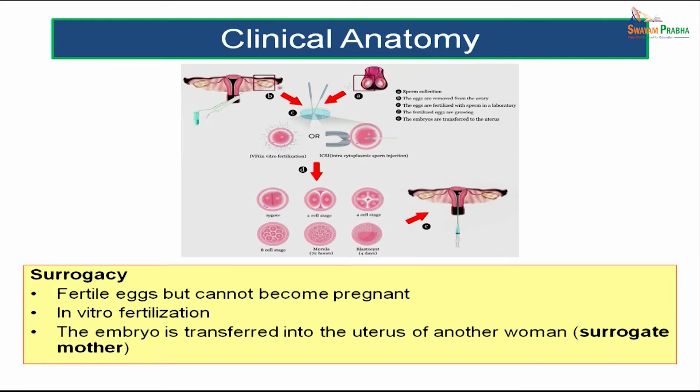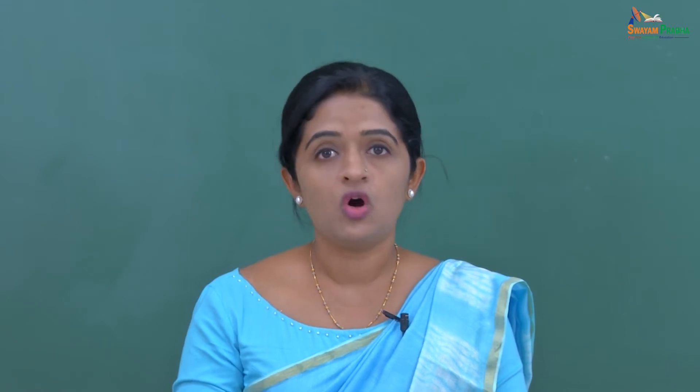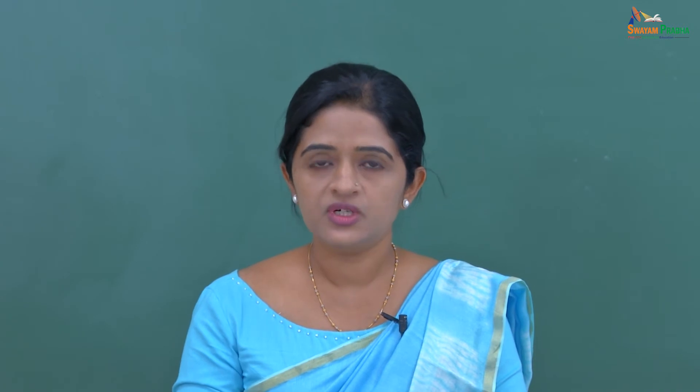The fertilization happens outside the uterus and the fertilized egg will be implanted or transferred into a woman who is willing to bear the child. The woman who is willing to bear the child is known as the surrogate mother. Even females who are not having a uterus can give their ovum, it will be fertilized with the sperm of their partner, and the fertilized embryo will be transferred into another woman where further development of the embryo happens. Such women who give birth to young ones not genetically related to them are known as surrogate mothers.